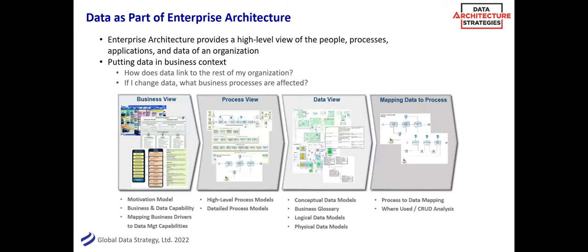Here's just a neutral view of it: enterprise architecture is that nice view of people, process, applications, data — and it can put it into context. Here's a subset of some of the deliverables we sometimes do in our projects: putting data into context. So what's the business view — a motivation model, why are we doing this? What business capabilities are we supporting? Down to the process view — how do we do order to cash, procure to pay, onboarding a patient? And then the data view. And then how do you start to layer them together? A popular one is mapping your data to process — the CRUD matrix, where data is created, read, updated, and deleted.